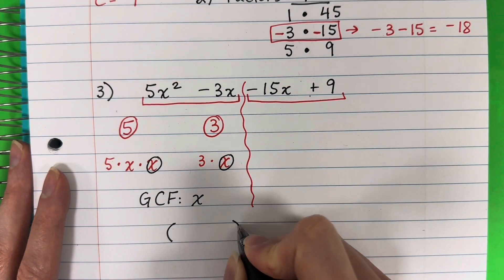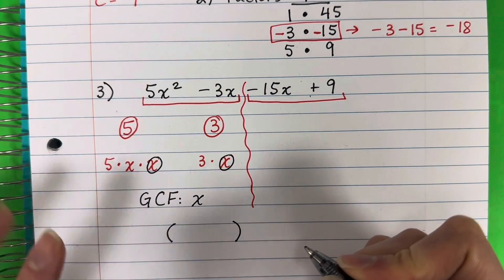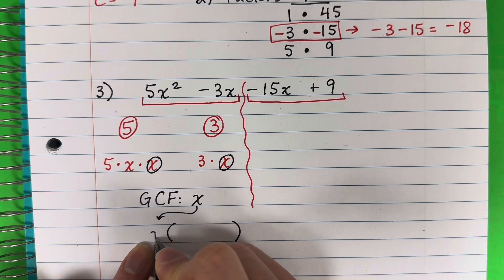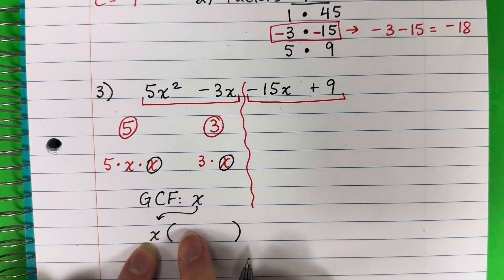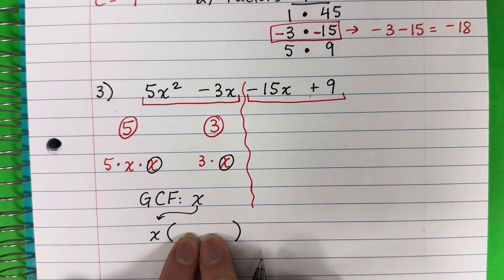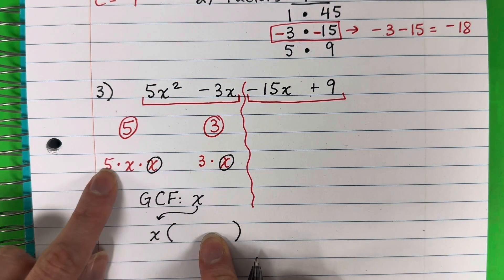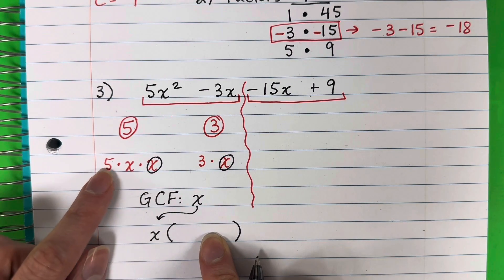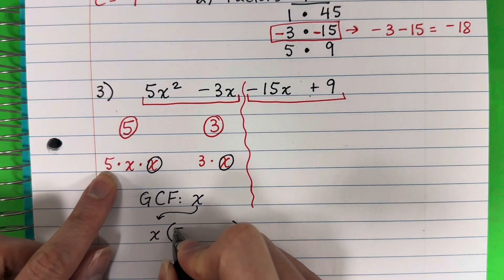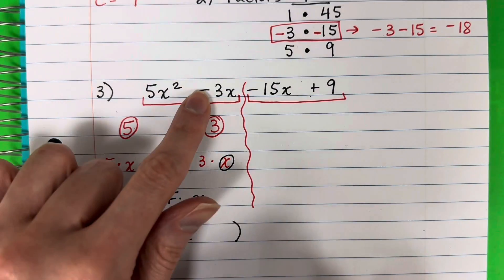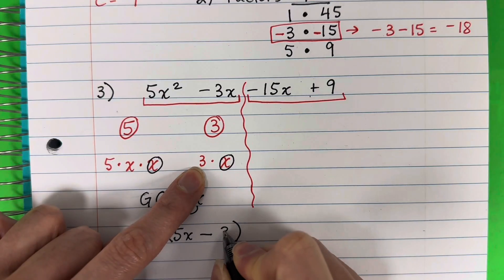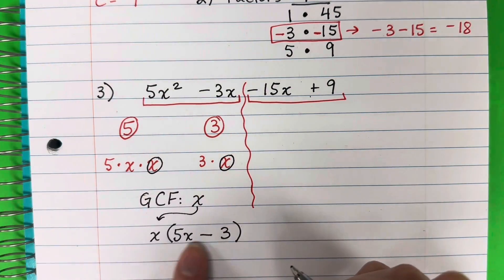So we open parentheses and put the GCF, which is x, outside. Inside, we put what is different. For 5x squared, what's different is 5x. The sign is negative. For 3x, what's different is 3. So we get x times (5x minus 3).